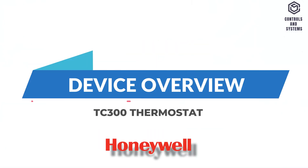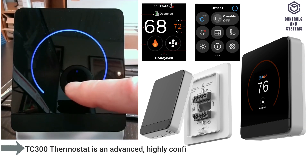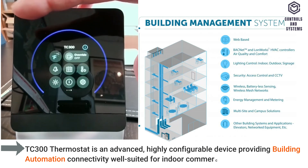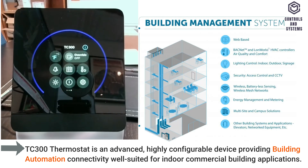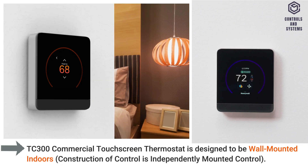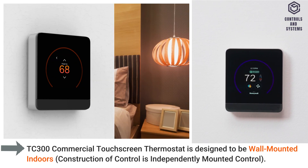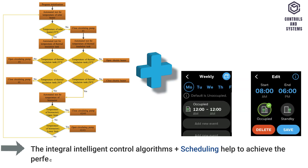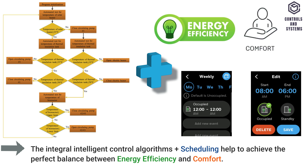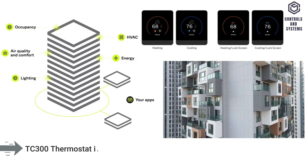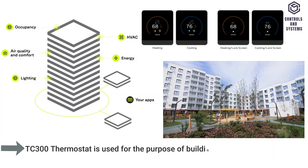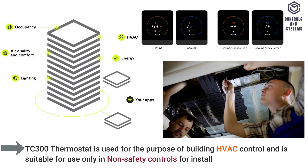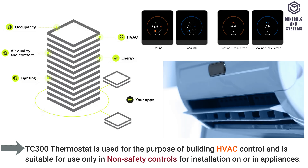Device Overview. The TC300 Thermostat is an advanced, highly configurable device providing building automation connectivity, well suited for indoor commercial building applications. The thermostat is designed to be wall-mounted indoors. The integral intelligent control algorithms plus scheduling help to achieve the perfect balance between energy efficiency and comfort. The TC300 Thermostat is used for building HVAC control and is suitable for use only in non-safety controls for installation on or in appliances.